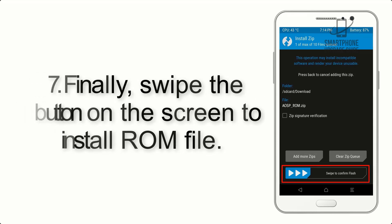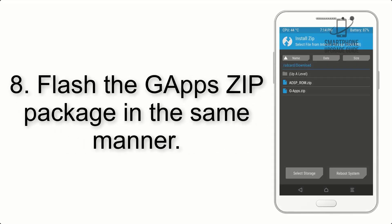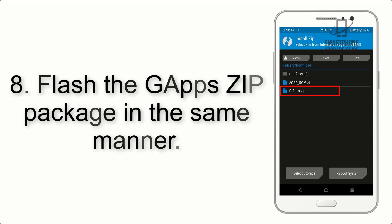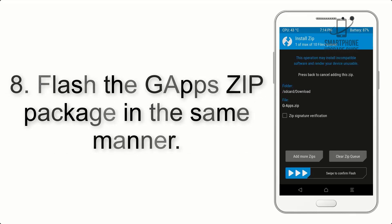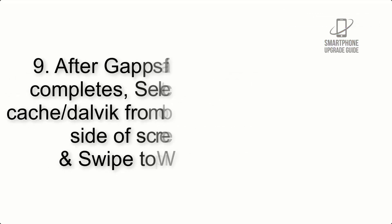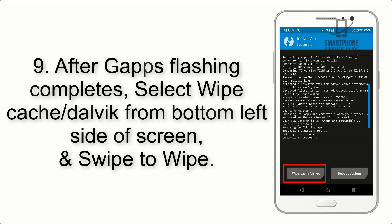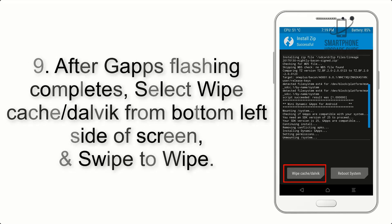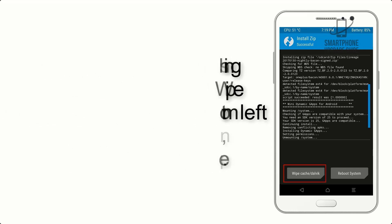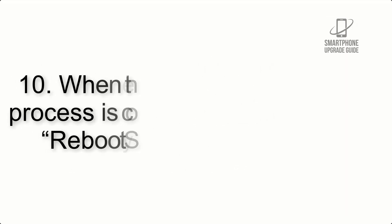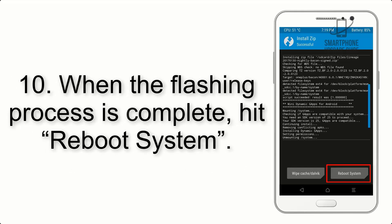Step 7: Swipe the button on the screen to install the ROM file. Step 8: Flash the GApps zip package in the same manner. Step 9: After GApps flashing completes, select Wipe Cache and Dalvik from the bottom left side of the screen and swipe to wipe.